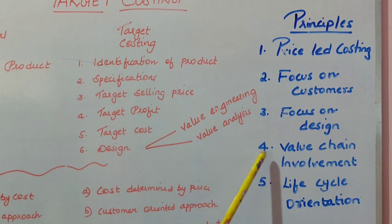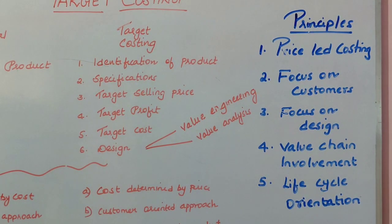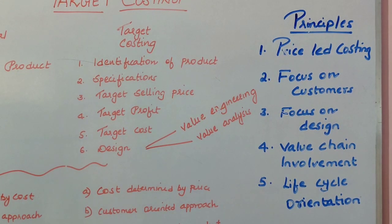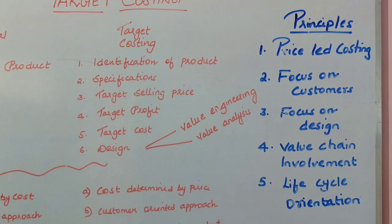The fourth principle is value chain involvement. In target costing, all value chain members — from customers to employees — are involved in setting the cost. The fifth principle is life cycle orientation: in target costing, the entire life of the product is studied before determining a cost for the product.